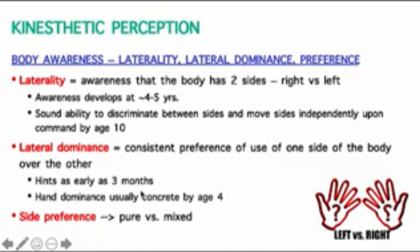The reason we can't really understand hand dominance super early is because of the development of bimanual tasks — distinguishing independent or complementary movements from hand to hand. There are periods where we have more unimanual versus bimanual tasks and then switch between the two. Usually by the time someone hits age four, you can understand what their lateral dominance or side preference would be.